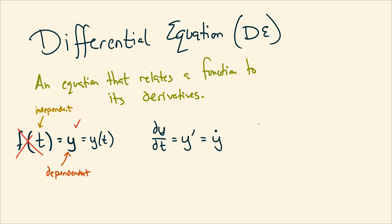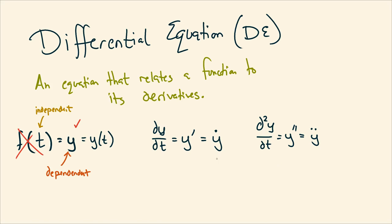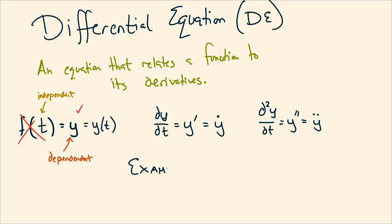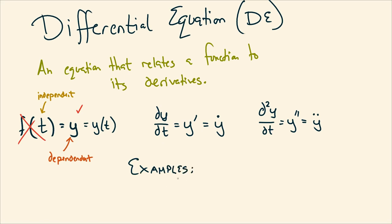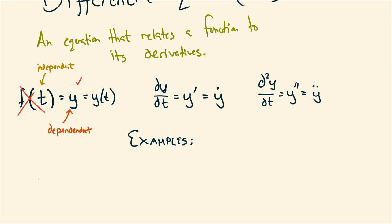With this new notation introduced, what are some examples of a differential equation? Like, T·ÿ + ẏ − 1/(Y·ÿ) = 3. That's an example of a differential equation — it's an equation that relates a function to its derivatives. Your original function is Y, and it's related to its first and second derivatives in this way. There's some physical situation this thing might be modeling — who knows what, I just made this off the top of my head. But you can see this is more complicated than anything we've really dealt with so far.